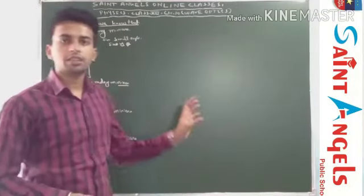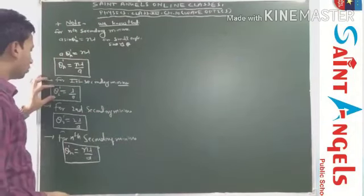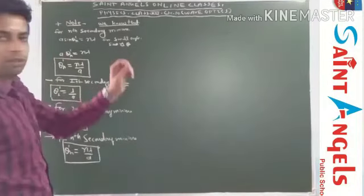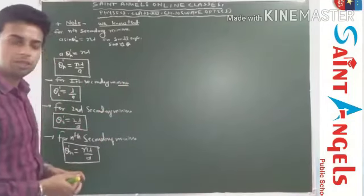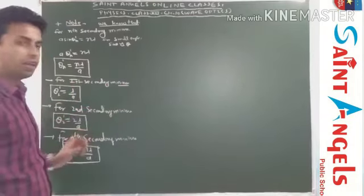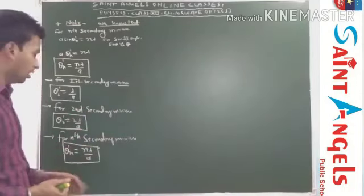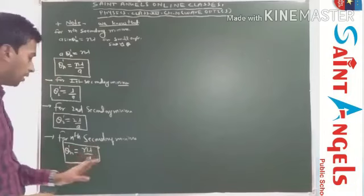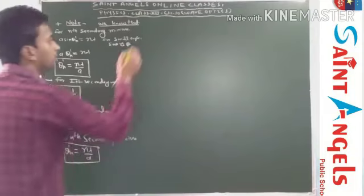It means if a set of rays diffracts at an angle of λ/a, then first secondary minima forms on the screen. If a set of rays diffracts at angular position 2λ/a, then second secondary minima forms on the screen. And if a set of rays diffracts at nλ/a, then nth secondary minima forms on the screen.